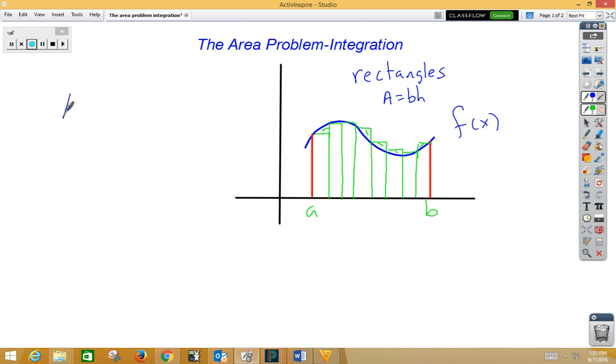So our idea here is: area is the limit as the number of rectangles approaches infinity of the sum from the first rectangle to an infinite number of rectangles, of the height of any rectangle—and we're going to refer to that with f(x*_k)—and the infinitely small width, which is Δx.